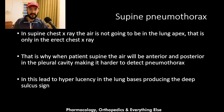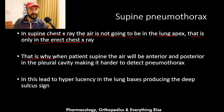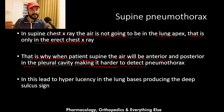In some situations we cannot get the patient to stand for the x-ray, so it is taken with the patient supine. In a supine chest x-ray, the air is not going to be at the lung apex as it is in an erect chest x-ray. When the patient is supine, air will be anterior and posterior in the pleural cavity, making it harder to detect the lung edge. However, in supine patients, there will be hyperlucency in the lung bases producing the deep sulcus sign and other signs that help diagnose supine pneumothorax.